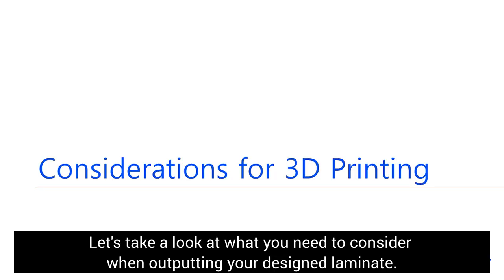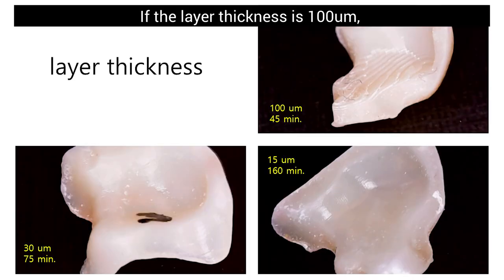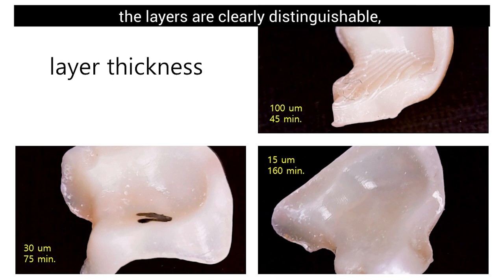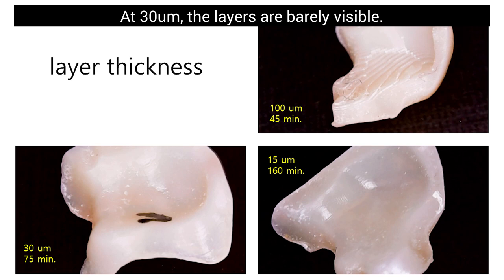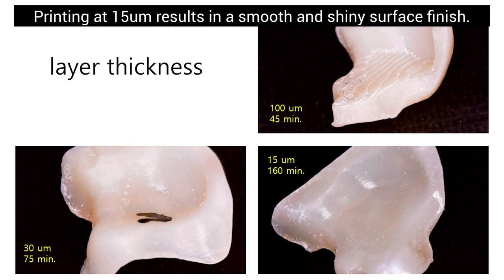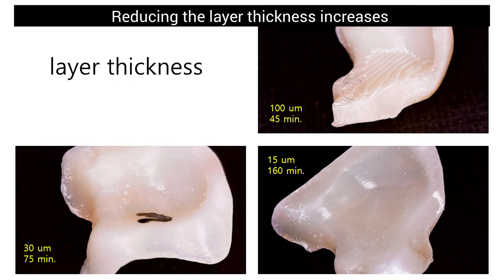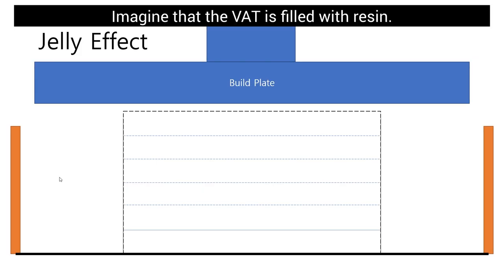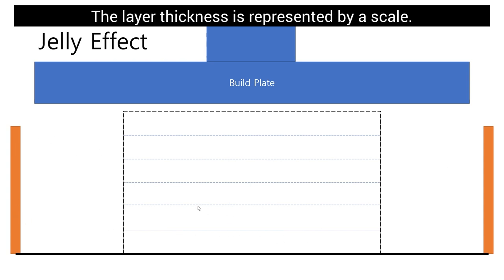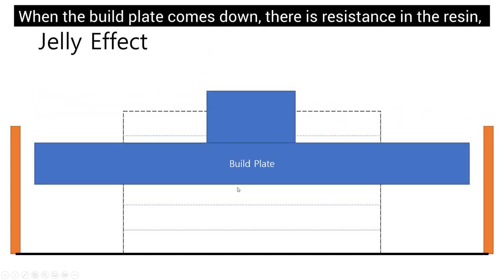Let's consider what you need when outputting your designed laminate. If the layer thickness is 100 micrometers, the layers are clearly distinguishable. Printing at 50 micrometers results in a smooth and shiny surface finish. Reducing the layer thickness increases the quality of the output, but it takes significantly more time.